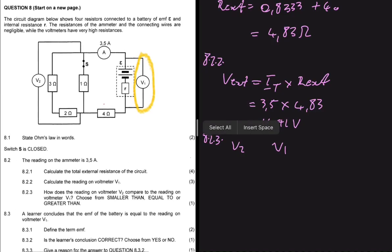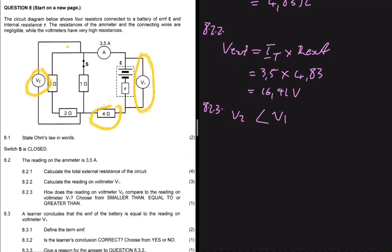V2 is connected across the parallel section of the circuit, so V2 reads V_parallel. V_external will obviously be greater than V_parallel because we also have the series resistor contributing to V_external. If that 4-ohm resistor weren't there, V_external would equal V_parallel, but it is there. So V2 is smaller than V1.